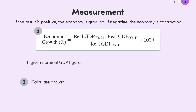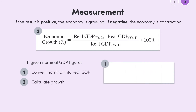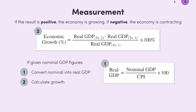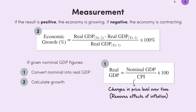Before we calculate economic growth, we have to convert nominal GDP into real GDP using this formula: Real GDP is equal to nominal GDP divided by CPI times 100. Essentially, we divide nominal GDP by the Consumer Price Index, or CPI for short, and multiply by 100. If you haven't run into it yet, the CPI measures changes in the price level over time. By dividing nominal GDP by CPI, we remove the effects of inflation and obtain real GDP, which we can then use to calculate real economic growth.